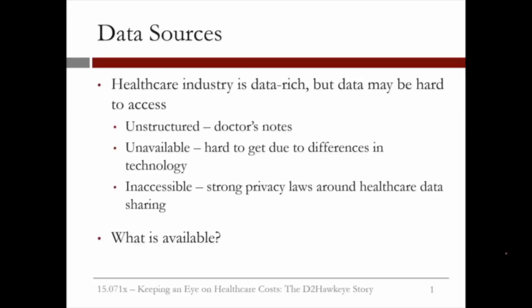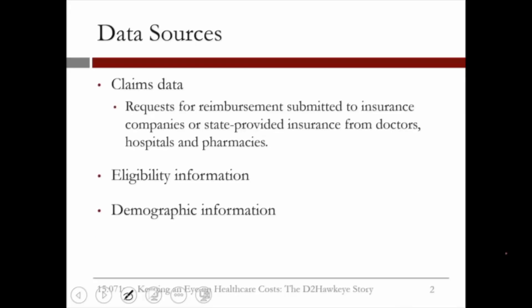So what is available? Claims data is a major source. Claims data are requests for reimbursement submitted to insurance companies or state-provided insurance from doctors, hospitals, and pharmacies. Another source of data is the eligibility information for employees. And finally, demographic information — gender, age.